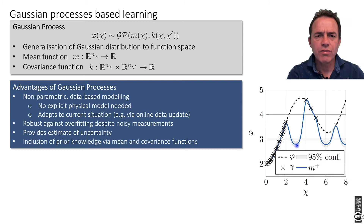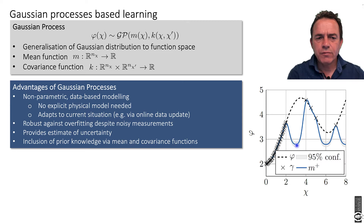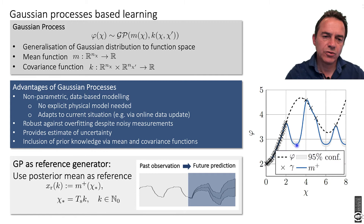The advantage of Gaussian process-based learning is that it's a non-parametric approach — you don't necessarily need a model. It's known to be robust against overfitting and provides an estimate of uncertainty that could be used in control. We use this as a reference generator for the breathing signal. We want to look from past observations in a moving window into the future to predict where the patient will breathe next.